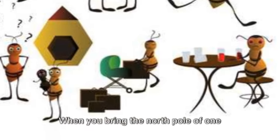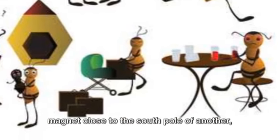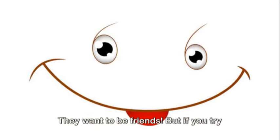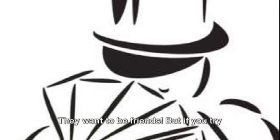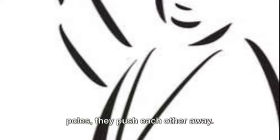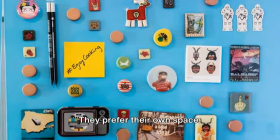When you bring the north pole of one magnet close to the south pole of another, they pull towards each other. They want to be friends. But if you try to introduce two north poles or two south poles, they push each other away. They prefer their own space.